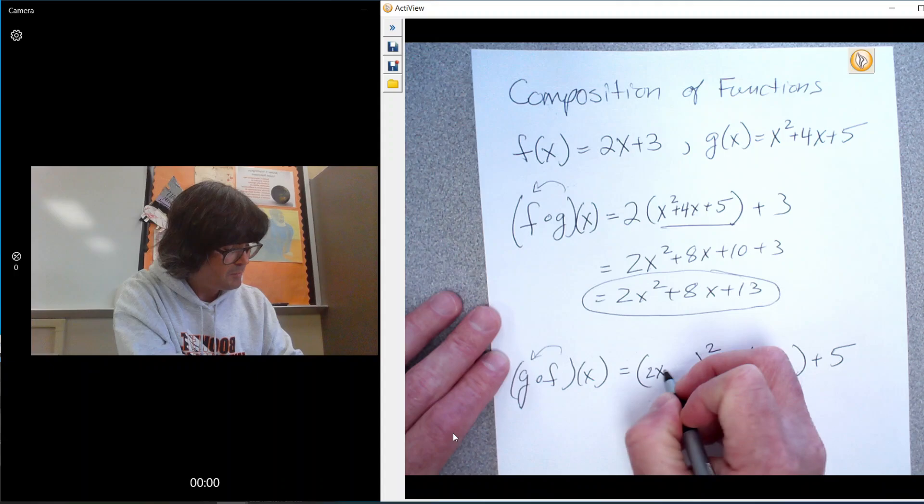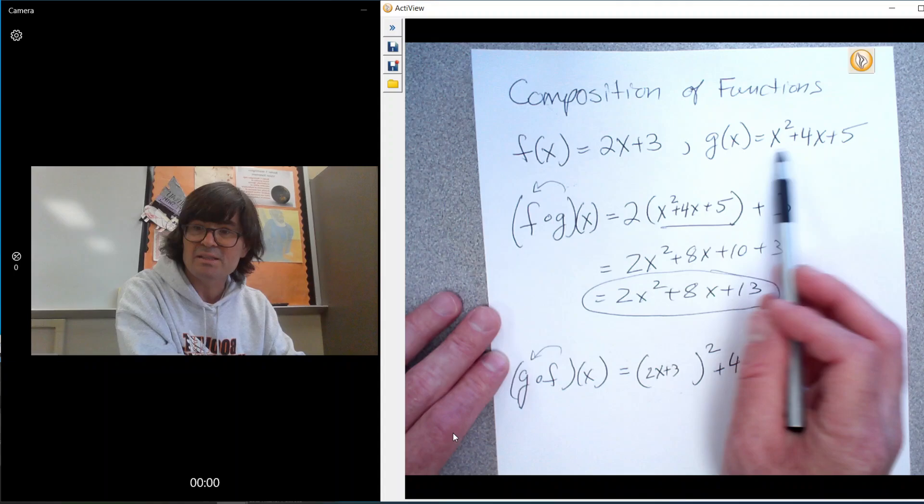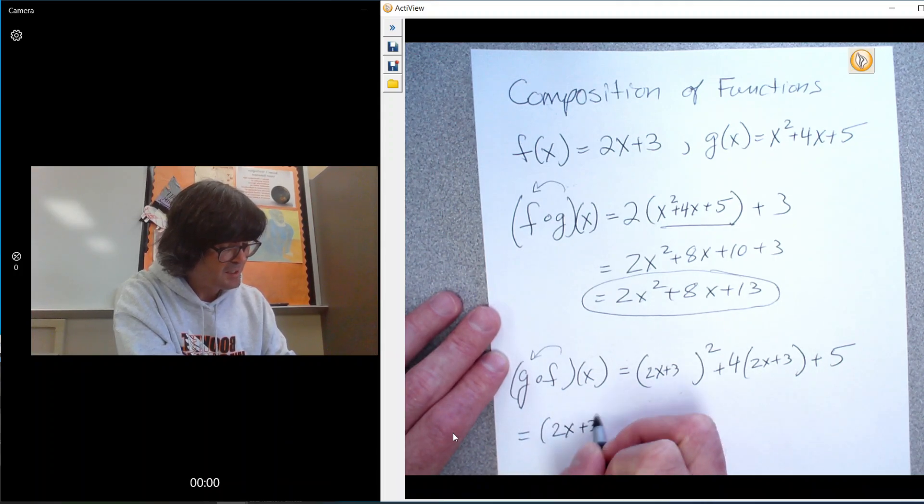So that would be 2x plus 3 and 2x plus 3. Function f goes into g everywhere you used to see an x. And you can multiply this out. This is 2x plus 3 times itself.